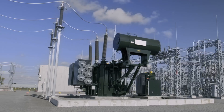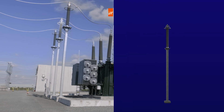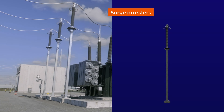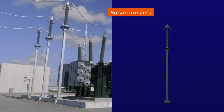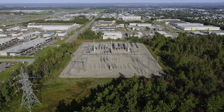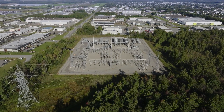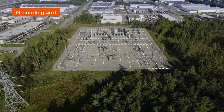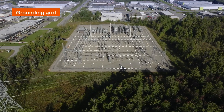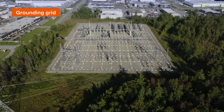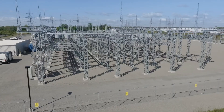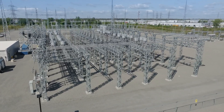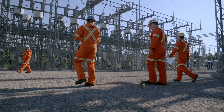Not far from the transformer are the surge arresters. They protect the transformers from overvoltage. When there are lightning strikes or switching operations, they send the electricity towards the ground. And on the ground, there's a grid of metal wires — a safety device that protects the entire substation. This grounding grid disperses the electricity downwards as a safety measure. As it leaves the transformer, the electricity is guided to more bus bars, breakers and disconnect switches before moving to its next destination.